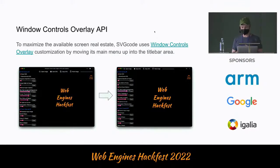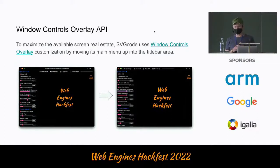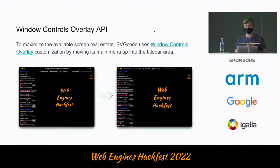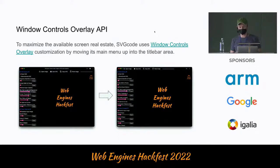You can see on the right-hand side I've activated the Window Controls Overlay, so there's a little bit more useful screen real estate. You can move up the menu buttons, for example. A lot of applications like VS Code could also move up controls for switching between different editors. The idea is to make use of the screen real estate, because most installed applications on Mac and Windows don't really have title bars anymore — they move content up there to make the most of the existing screen real estate.